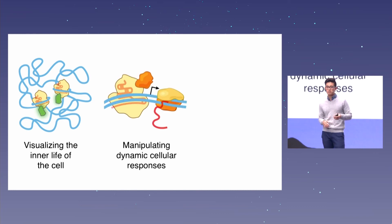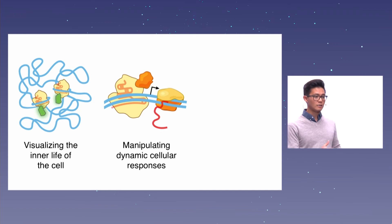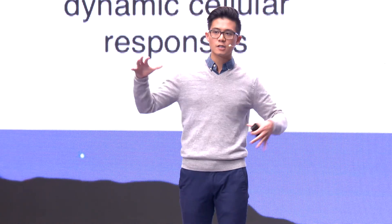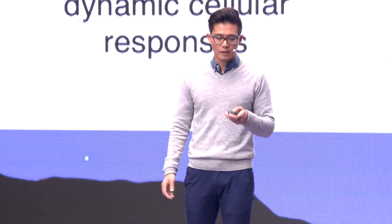We could also not just look, but we can also touch. We can manipulate dynamic cellular responses by changing how the cell can convert its DNA to RNA, and eventually to proteins to orchestrate cellular logic. By manipulating these dynamic cellular responses, we can really start to understand the sort of overarching function of cells and how they can sort of respond to their environment.